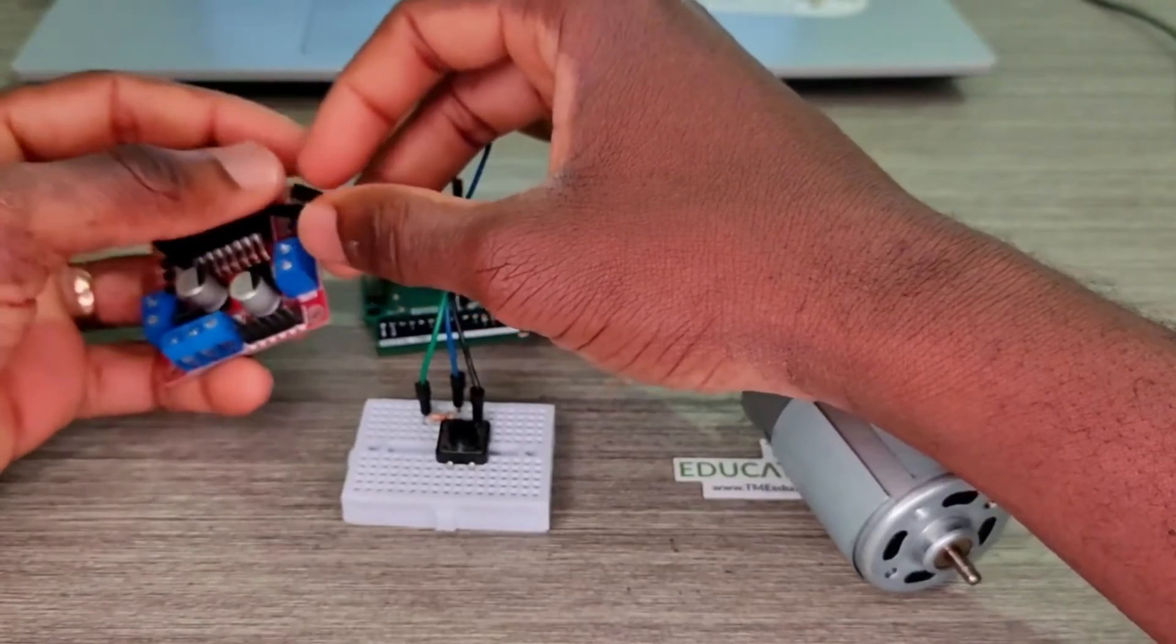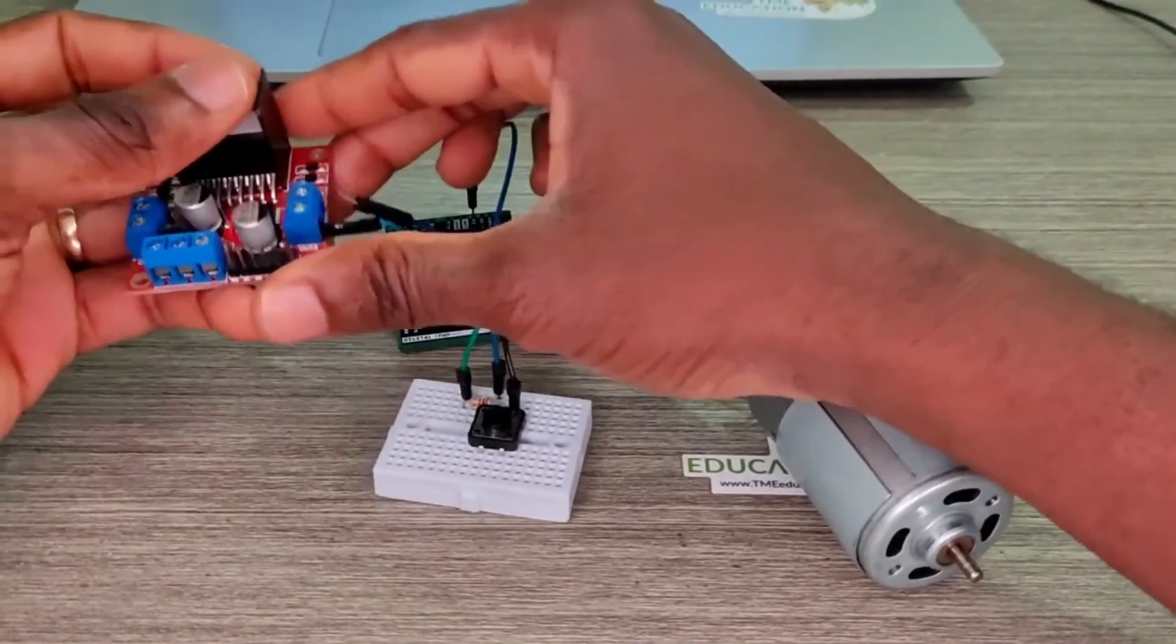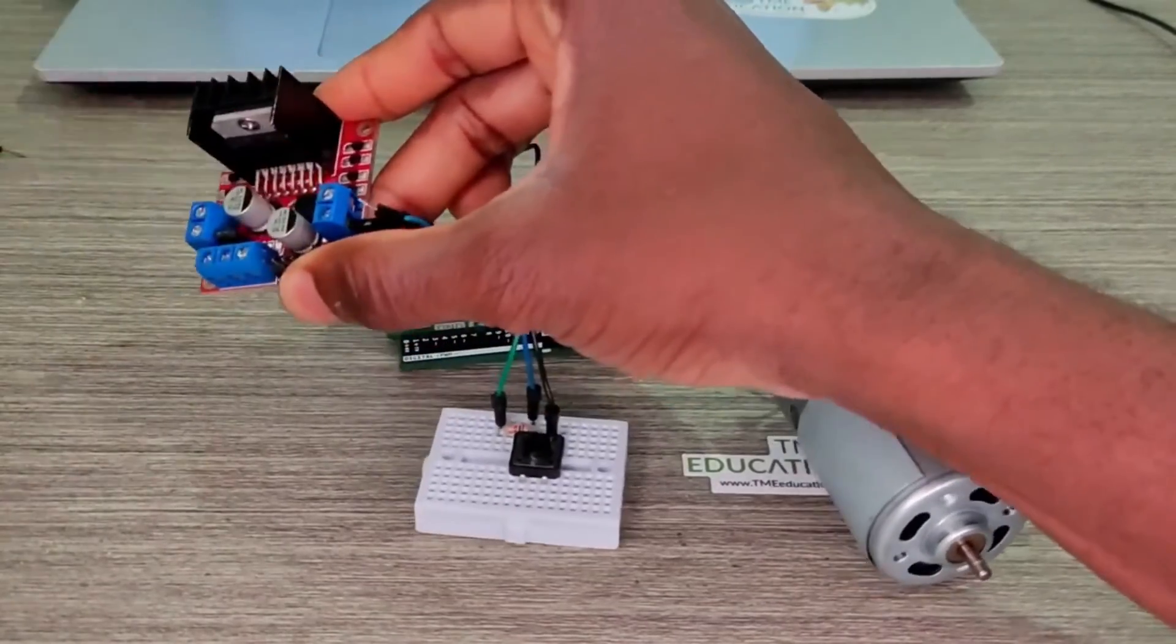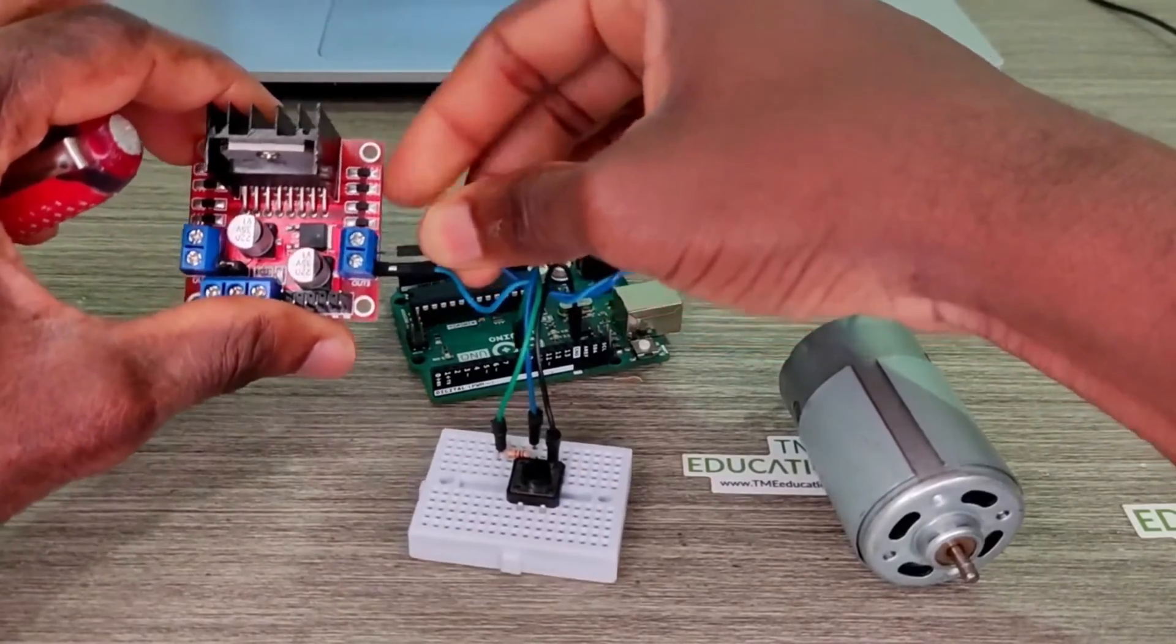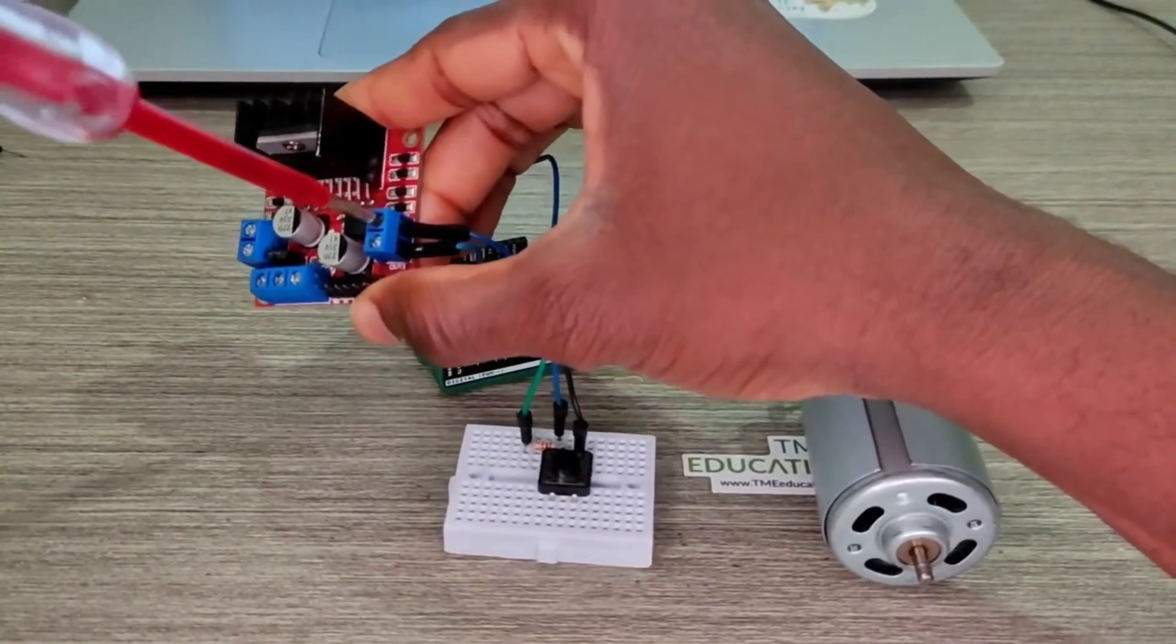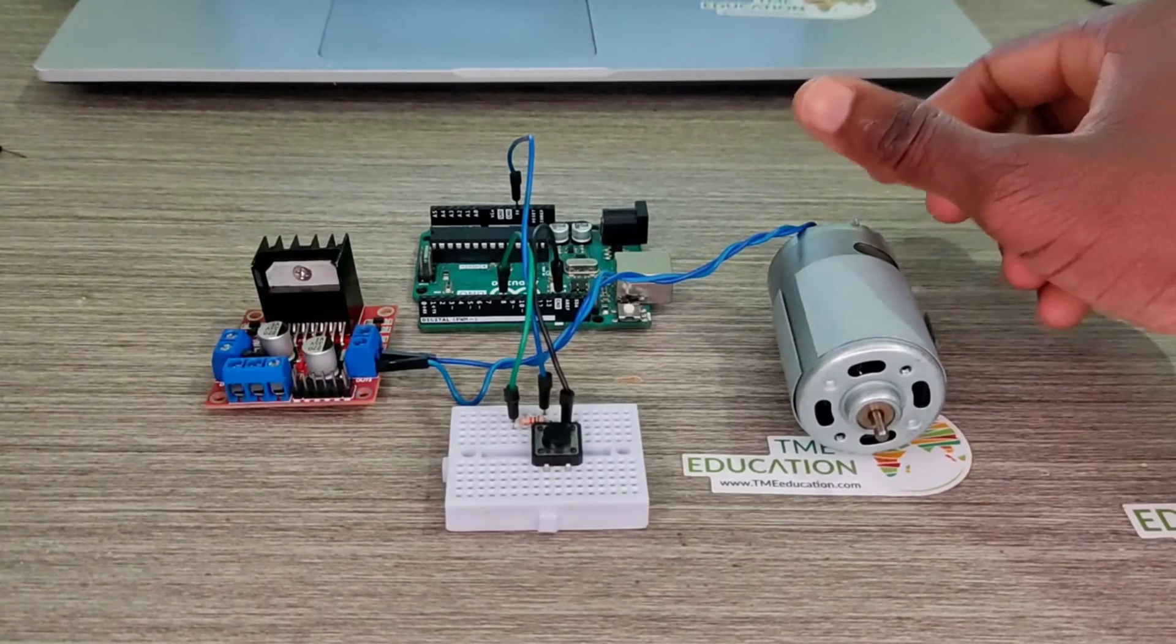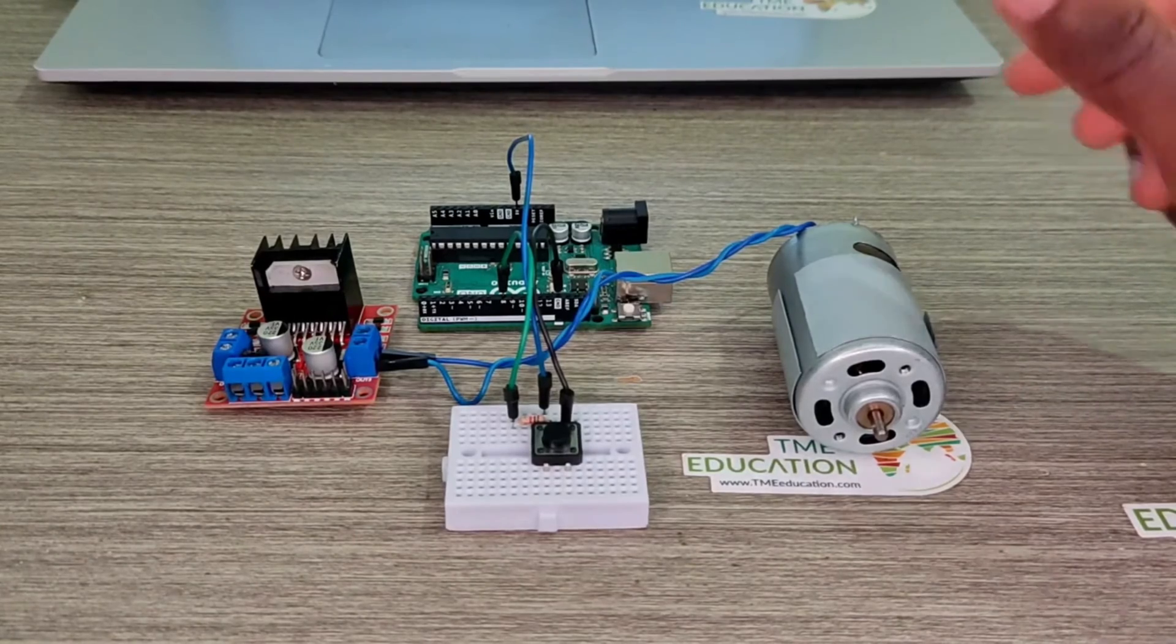We're going to use output 3 and 4. So that goes to output 3. We need that to connect this side of the DC motor to output 3, and this cable is going to output 4.